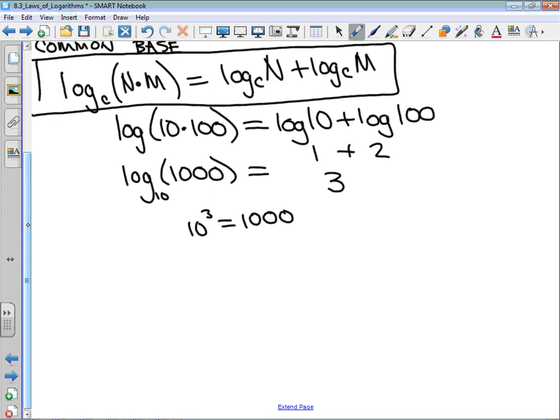Now, throughout math courses, when you start to talk about multiplication, typically division is the next thing that you talk about. And if I have log base c of n divided by m, and I'm just going to put above it that m cannot be equal to 0, but it's in a logarithm, so it couldn't anyway. We can split that into two logarithms as log base c of the numerator minus log base c of the denominator.